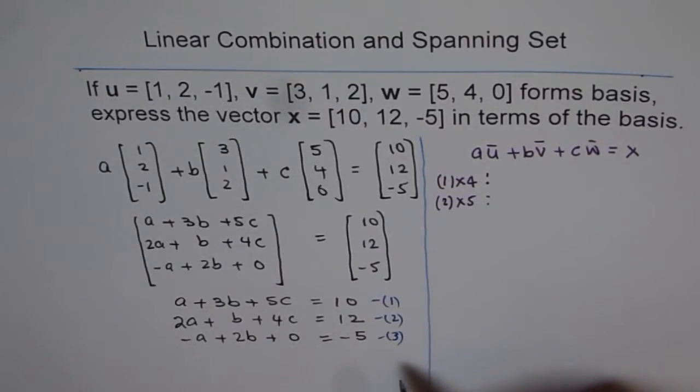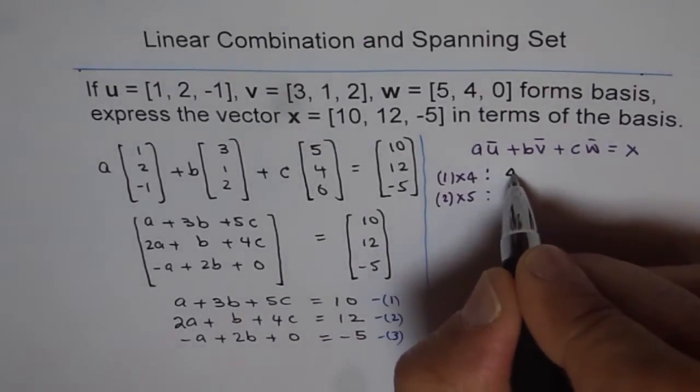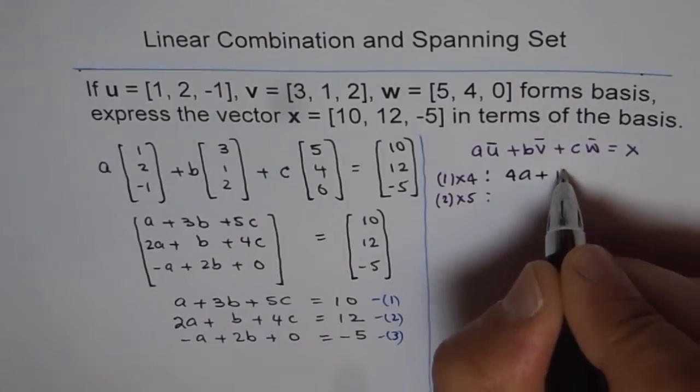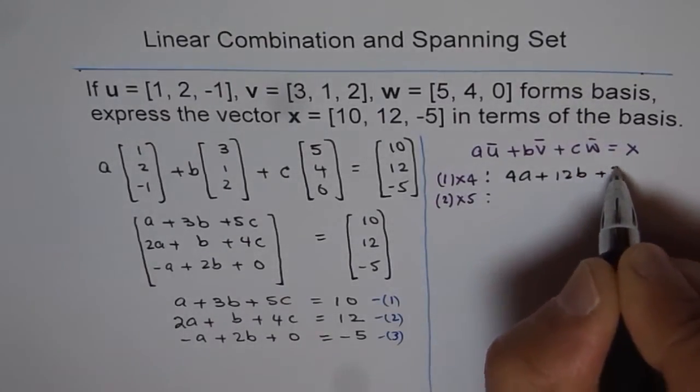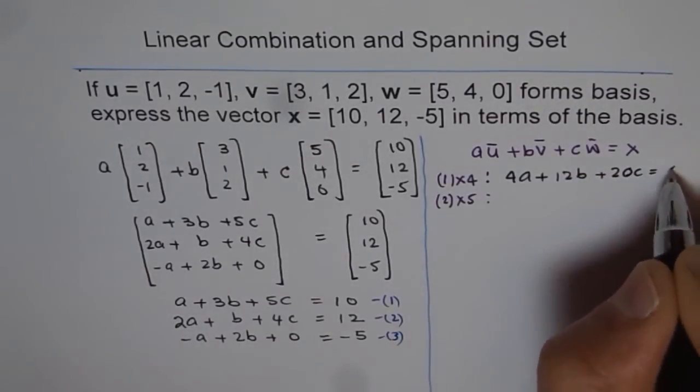So these numbers actually help us to communicate. If I multiply this by 4, what do I get? I get 4A plus 12B plus 20C equals 2, 40.